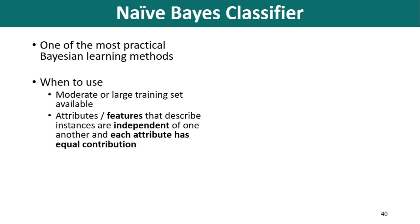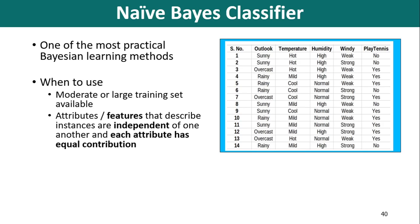Let me focus on this second condition once again. Attributes or features that describe the instances in the dataset are independent of one another, and each attribute has equal contribution in producing the outcome. To clarify these two conditions, let us see one example.